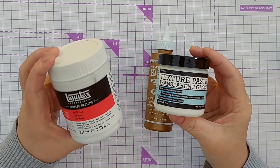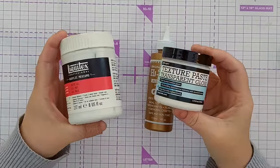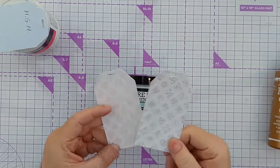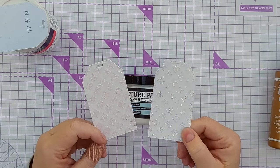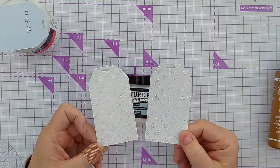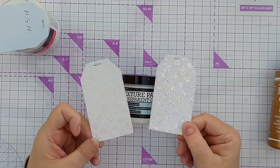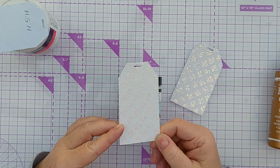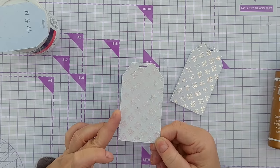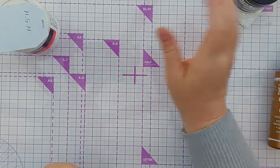These two—the Liquitex Matte Gel and the Ranger Transparent Gloss Texture Paste—worked really well. With the Ranger, I did chunky glitter through a stencil and tiny glitter through a stencil, and both worked really well. The glitter and paste pretty much stayed where I wanted it. The Texture Paste Transparent Gloss is really good for making your own glitter paste.